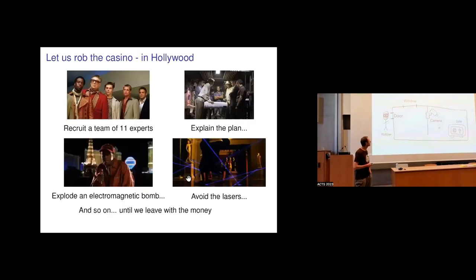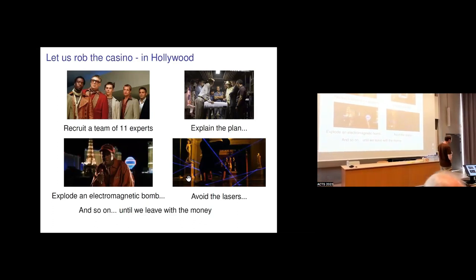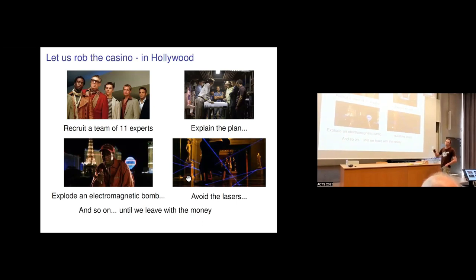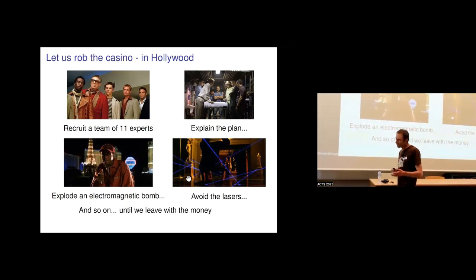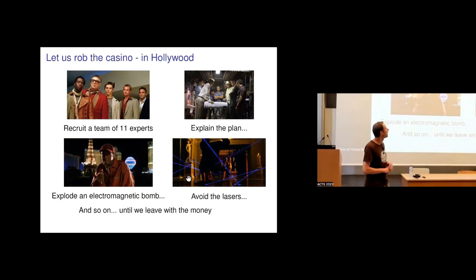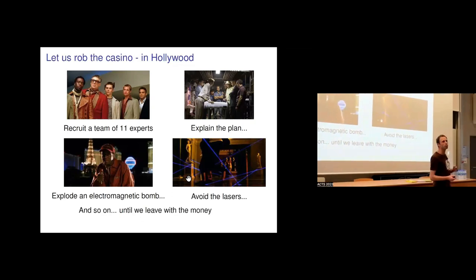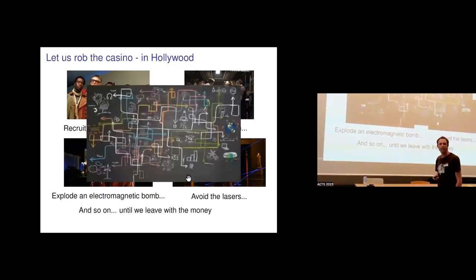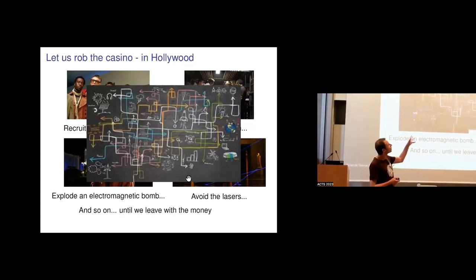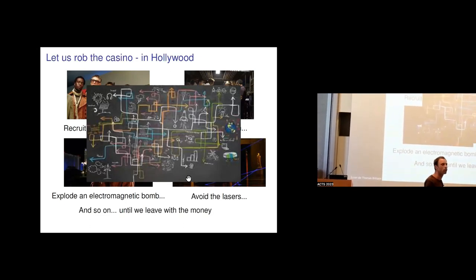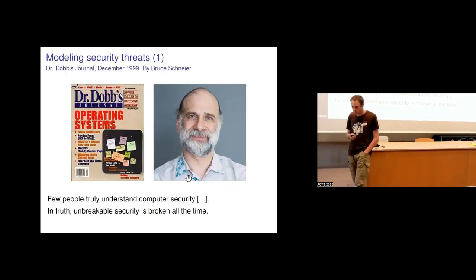Hollywood has imagined far more complicated ways to rob a casino. In Ocean's Eleven, Twelve, or Thirteen, it was really tricky — at some point they used an electromagnetic bomb to shut down the power, put an acrobat in a box, and so on. So the question is: if you want to prevent such complex attacks — not especially the Hollywood ones — how would you do it? This is the question of cyber security and how to model threats.